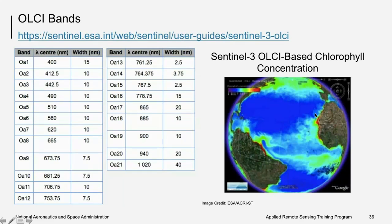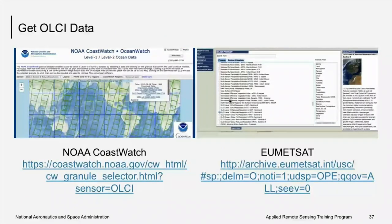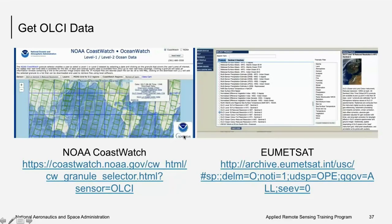OLCI provides measurements in visible and near-infrared bands used for detecting algal bloom. A map of chlorophyll-a concentration from OLCI shows that darker colors in coastal regions indicate high chlorophyll concentration — where phytoplankton and algae are blooming, some of which may be harmful. To access OLCI data, two options are available: NOAA CoastWatch (discussed later in this presentation) and the EUMETSAT data portal, where Level 1 OLCI data from Sentinel-3 can be searched and downloaded.